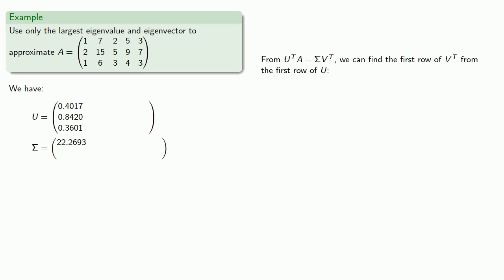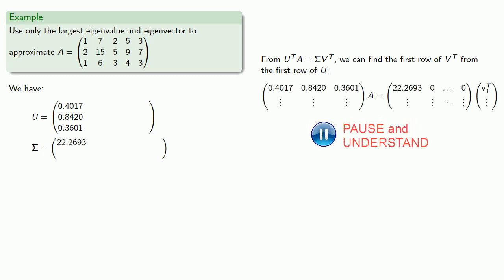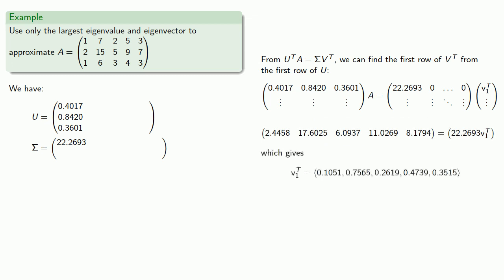Now from U^T A = Σ V^T, we can also find the first row of V^T from just that first row of U, which gives us V^T, which will be the first row of our matrix V^T.